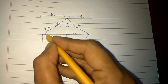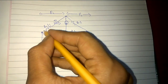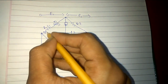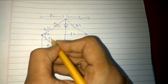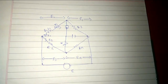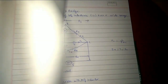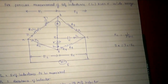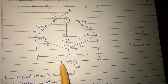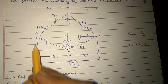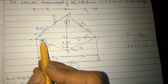Now the current distribution — current goes from here and distributes into two paths: I1 and I2. The further detail I will explain in this diagram, which is made much more neatly. The current goes from here and divides into I1 and I2.